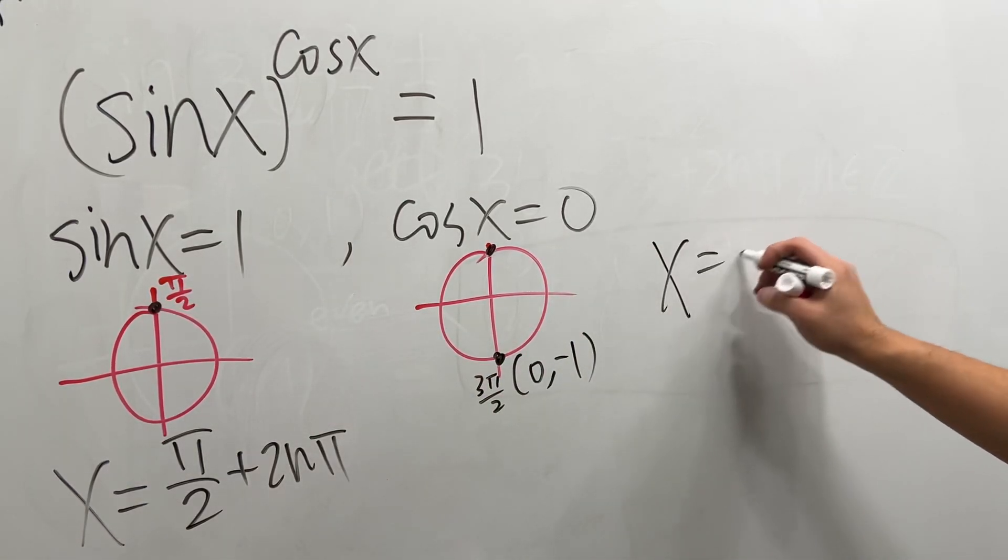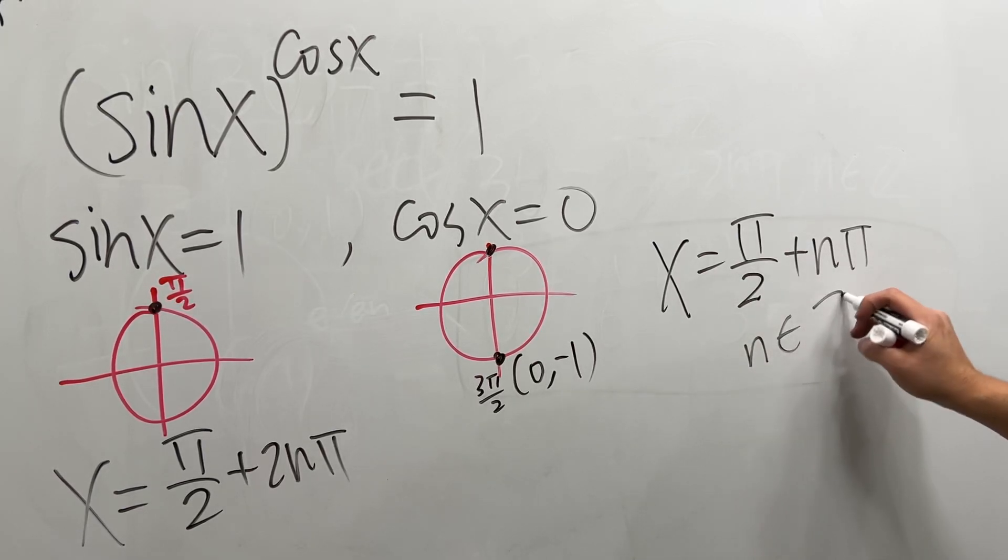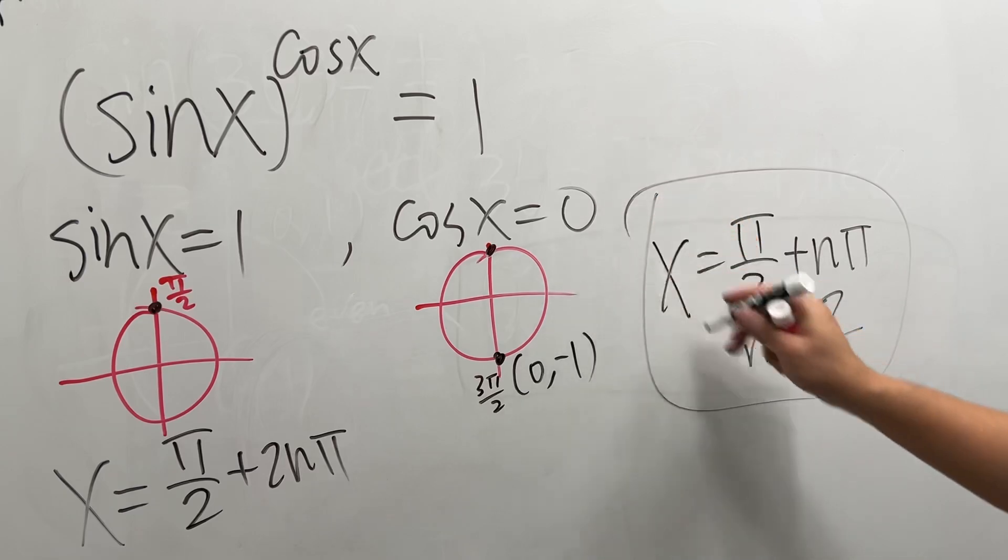So finally, x equals pi over 2 plus n pi, where n is an integer. Yeah, that's it.